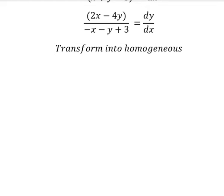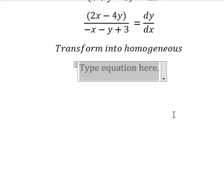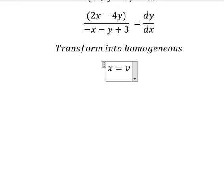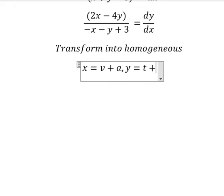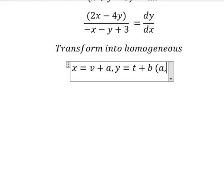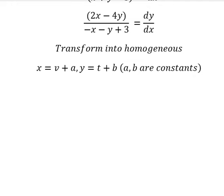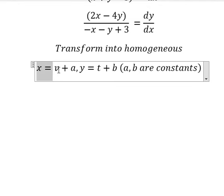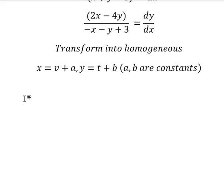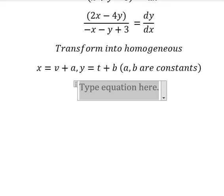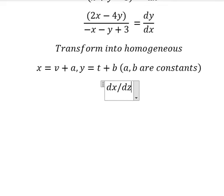Now I will put s equals v plus a, and y equals t plus b, where a and b are constants. Now we do first the derivative of this one, so we have ds over dz equals dv over dz.